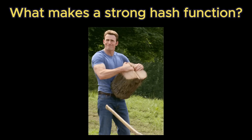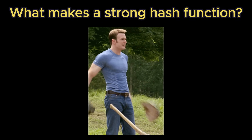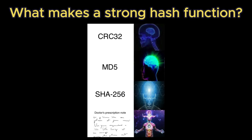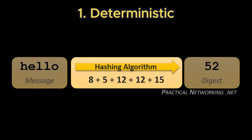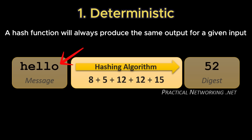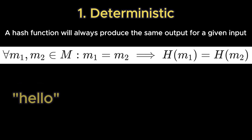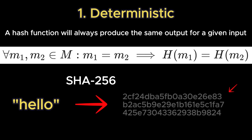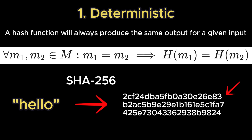A strong hash function possesses several critical properties that make it secure and reliable. First, it is deterministic, meaning the same input always produces the same hash. This can be expressed mathematically as the following. For example, hashing the string "hello" with SHA-256 produces a consistent hash value.